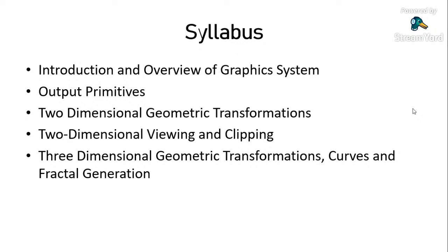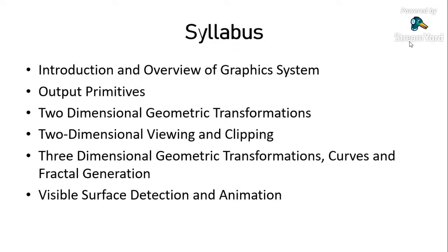Chapter five covers three-dimensional geometric transformations. We started with two-dimensional and now move towards three-dimensional. In chapter five, we will discuss 3D geometric transformations, various 3D object representation methods — how 3D objects can be represented in a computer system — and then various curves and fractals, which are the more advanced parts of the syllabus.